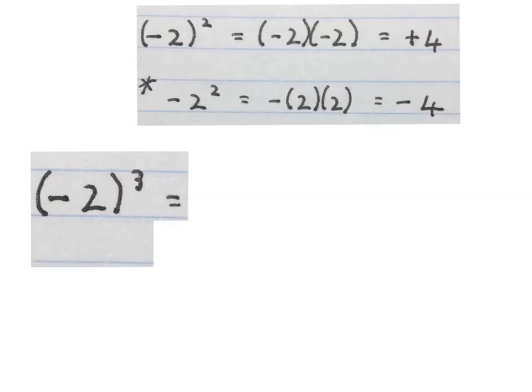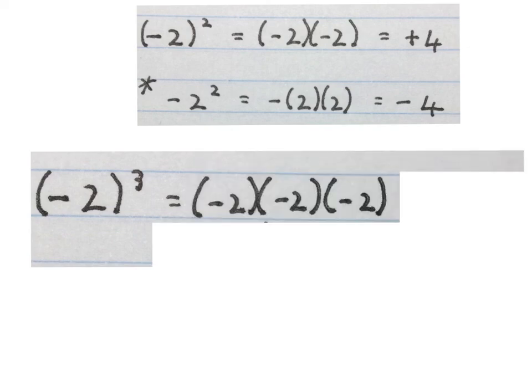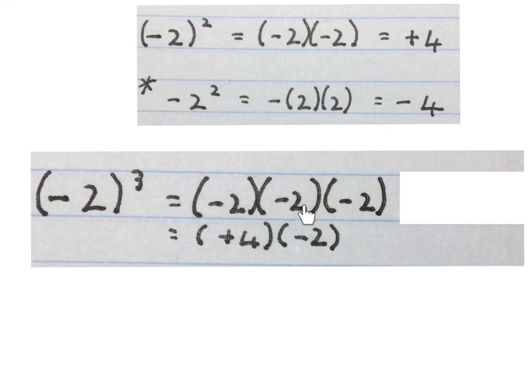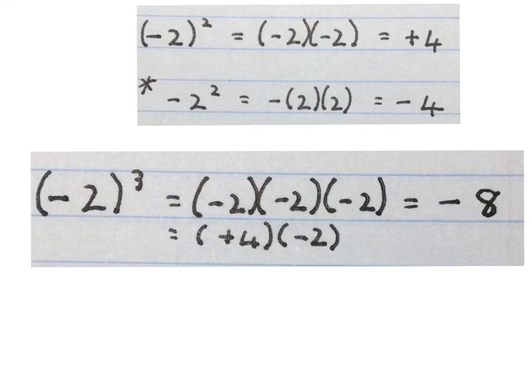The last calculation on integers in this video: bracket minus 2 all cubed. It means we must do minus 2 times minus 2 times minus 2. The first two brackets together give a plus 4, times the minus 2. Final answer: minus 8.